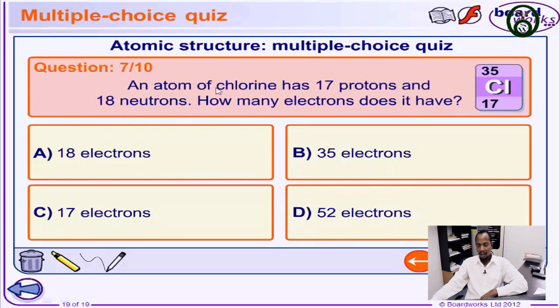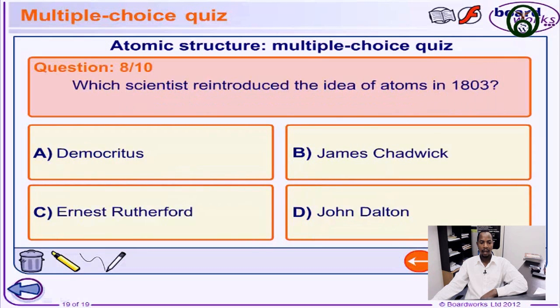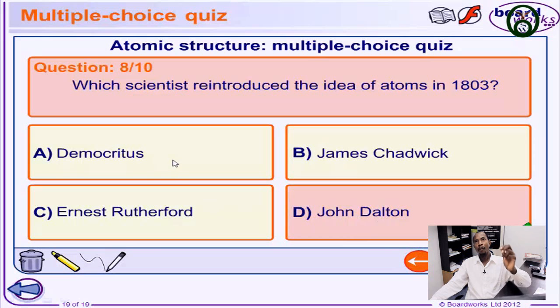An atom of chlorine has 17 protons and 18 neutrons. How many electrons does it have? Since the number of protons equals the number of electrons, the answer is 17. Which scientist reintroduced the idea of the atom in 1803? It was John Dalton, who reintroduced the idea after Democritus, who had proposed it in 450 BC. Thank you very much for listening to today's video.